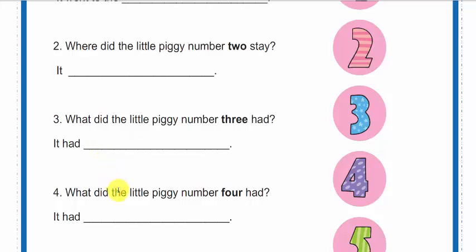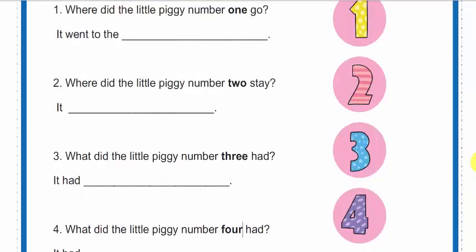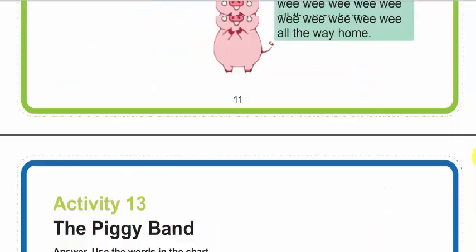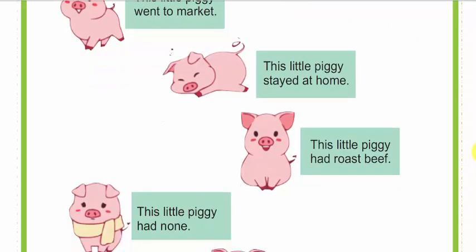The number four: What did the little piggy number four had? ¿Qué tuvo el puerquito número cuatro? If we check the story or the song, si checamos la historia o la canción, the number four: This little piggy had none. Este no tuvo nada o no comió nada.